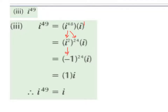i squared becomes minus 1, so it's minus 1 raised to the power of 24, and that's still all multiplied by i. Minus 1 to the power of 24 you can do in your calculator, or you might know that minus 1 to the power of an even number always gives us positive 1. So minus 1 to the power of 24 is 1, and 1 times i is just i. Therefore, i to the power of 49 is i.